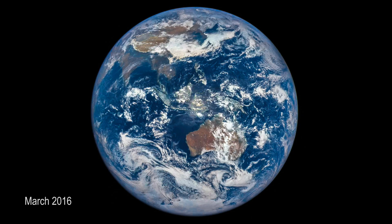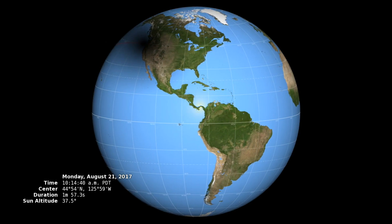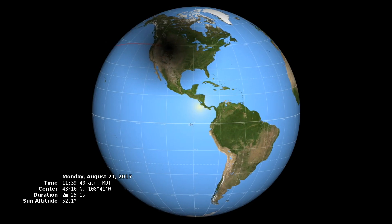NASA's Earth Polychromatic Imaging Camera, called EPIC, will capture images of the moon's shadow passing over Earth.